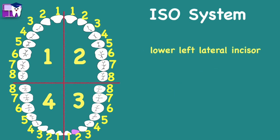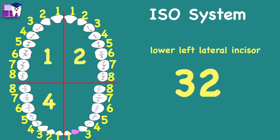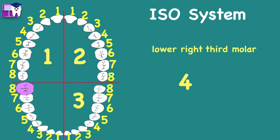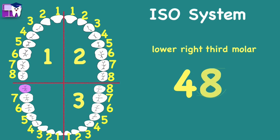Another example: the lower left lateral incisor. The lower left quadrant is number 3, while the lateral incisor is number 2. Write 3 and 2 — say this is 3-2, not 32. How about the lower right third molar? Lower right is found on the fourth quadrant, and the third molar is counted as number 8. Write 4 and 8 — say this is 4-8, not 48.